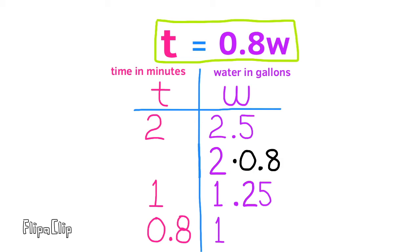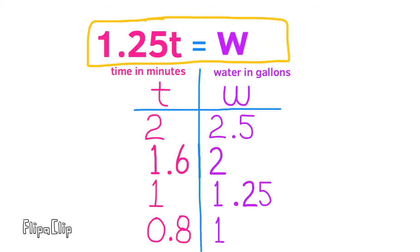Let's try one more for this equation: 2 gallons × 0.8 = 1.6 minutes. That means it takes 1.6 minutes for two gallons of water to collect in the tub.